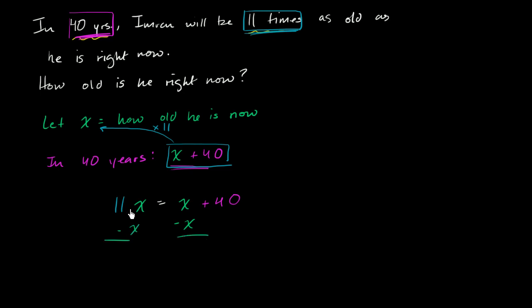If I have 11 of something and take away one, I'm left with 10 of that something. So 10 times x equals 40, since x minus x on the right is zero.